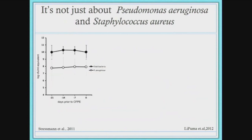One study looked at bacterial load — measured in CFU per mL on the y-axis — with days prior to a cystic fibrosis pulmonary exacerbation on the x-axis. You would expect the bacterial load to increase when getting closer to an exacerbation, but as you can see, the bacterial load doesn't increase. The total bacterial load — represented by the black line — also doesn't really change much. This could allude to the fact that there are other more lowly abundant bacterial populations that are fluctuating and causing exacerbations, or maybe it's not even dependent on bacterial load at all.